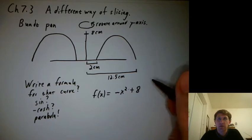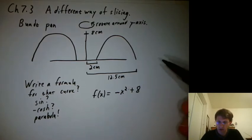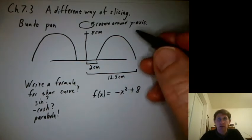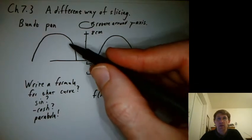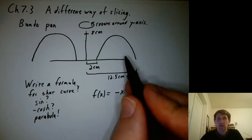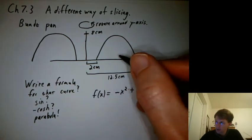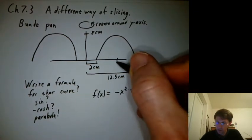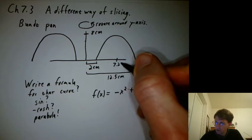Any improvements we can make or any way that this doesn't model current reality? Well, that would be a parabola centered on the y-axis, but we want it centered over here. Where would it be centered? Well, what's halfway between 2 centimeters and 12.5 would be 7.25.